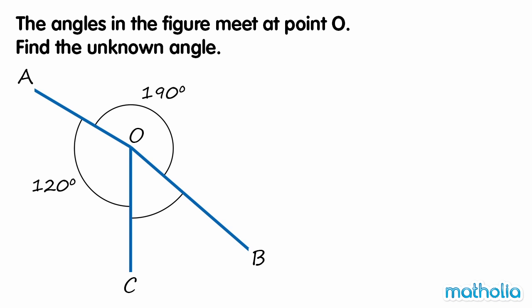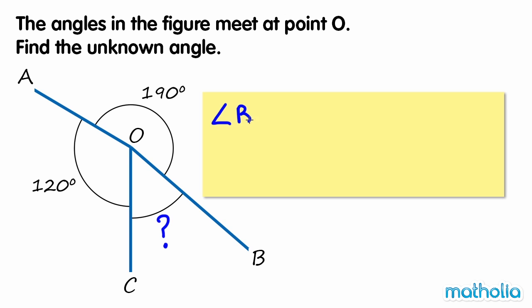The angles in the figure meet at point O. Find the unknown angle. We need to find angle BOC. Recall that the sum of the angles around a point is 360 degrees. So angle BOC can be found by subtracting the known angles from 360 degrees.